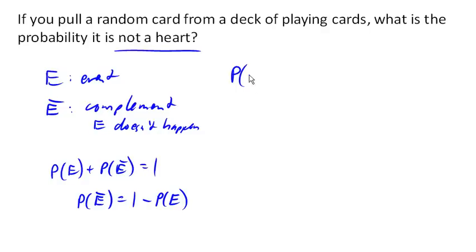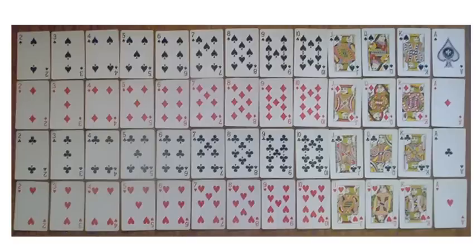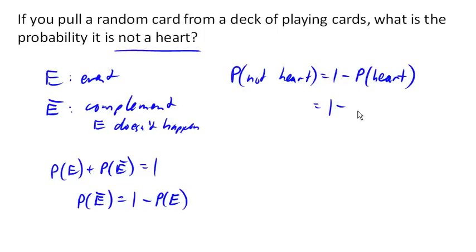So the probability of not getting a heart is 1 minus the probability of getting a heart. And what is the probability of getting a heart? Well, there are 13 hearts out of the 52 cards in the deck.